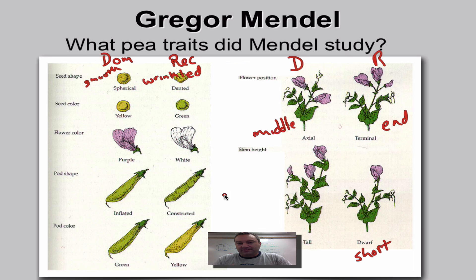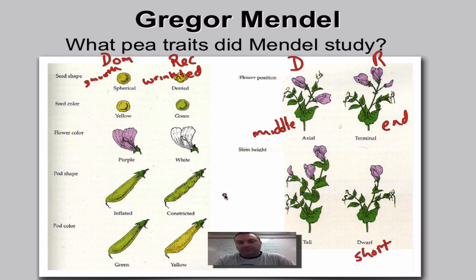This episode is really short and sweet. The next episode, part seven, is over Mendelian vocabulary. You must absolutely positively master the next episode, because you need to know what all these words mean in order to do genetic problems correctly. So until episode number seven, we'll catch you on the flip side.